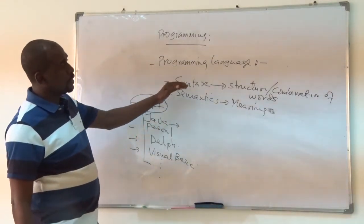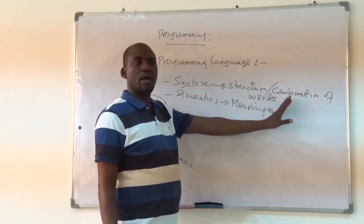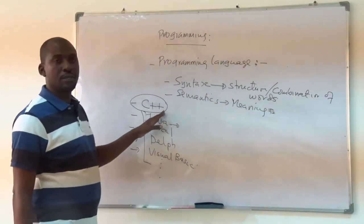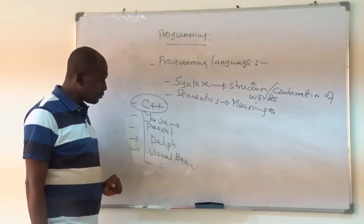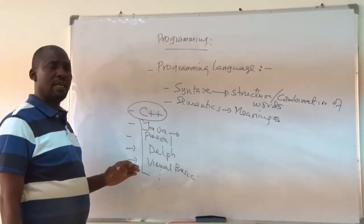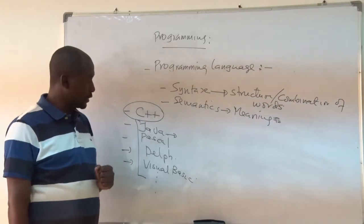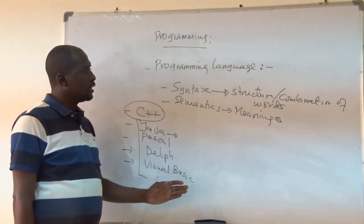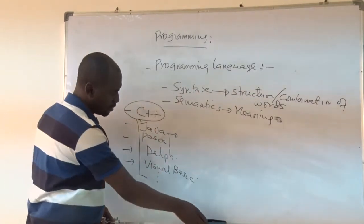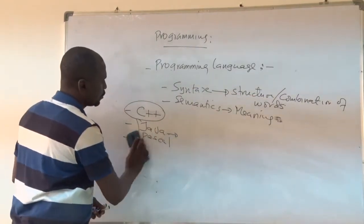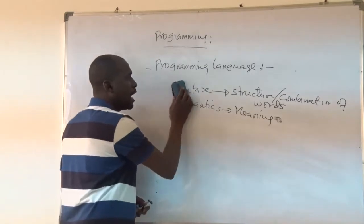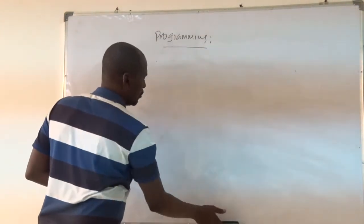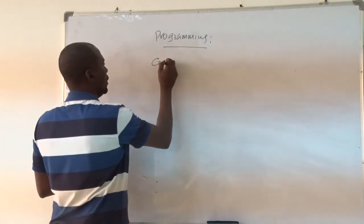Now, in order to write a program, we are going to write in C++ language. Just as any language has its own dictionary where you can find vocabularies, the same applies to programming languages and computers. This is where the compiler comes in — we have what we call a compiler.